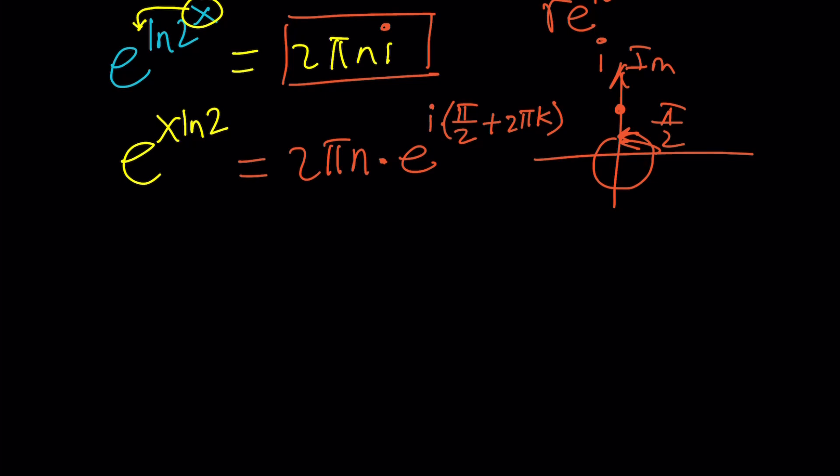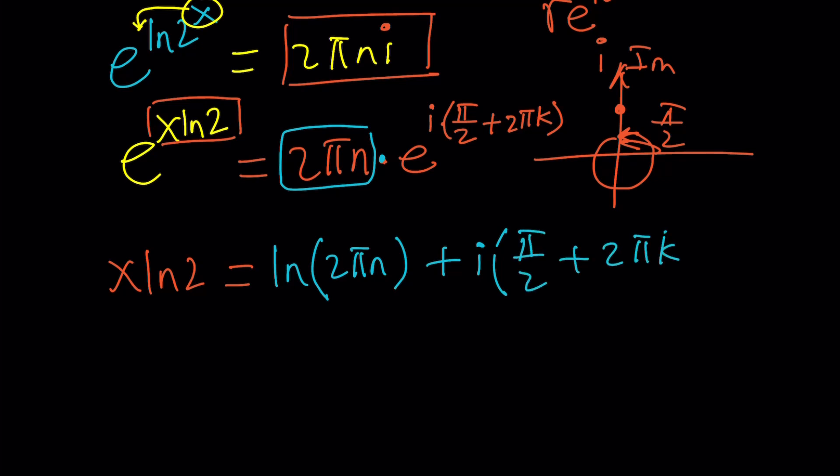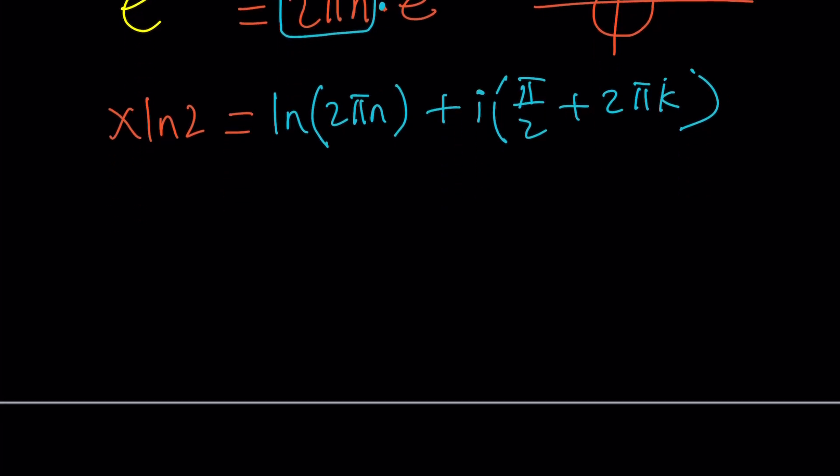Now, we're going to go ahead and ln both sides, or log both sides, with natural log. And that's going to bring this down. So, we're going to get x ln 2. And when you ln this, because this is just a real number, you're going to get ln of that number, 2 pi n. Plus, because ln of a product is just the sum of 2 ln's, and you're going to get the exponent from here, because it has an e base. And now, this should be almost x, right? All we have to do is divide by ln 2, and we'll be done. But before we divide by ln 2, let's go ahead and kind of make a common denominator here, and let's write it in a nicer way. Actually, we can do the following. We can go ahead and multiply both sides by 2. Let's do it. And then, that will clear the fraction.